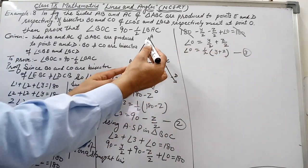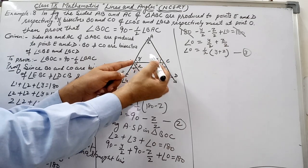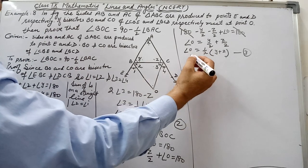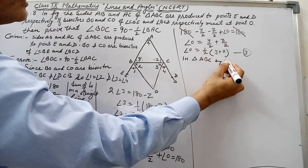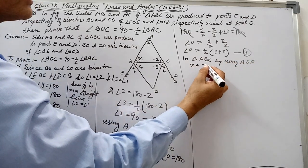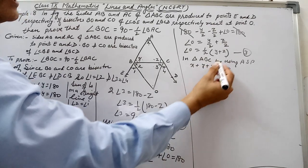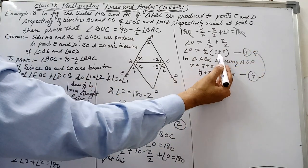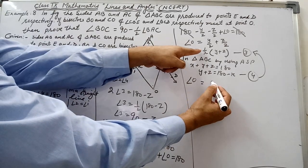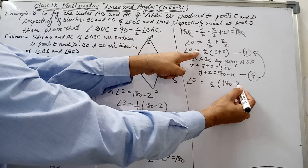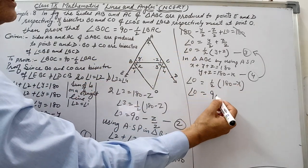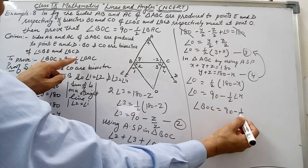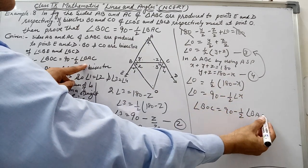Now we find Y plus Z from triangle ABC. By angle sum property, X plus Y plus Z equals 180 degrees, so Y plus Z equals 180 minus X. This is Equation 4. Substituting Equation 4 into Equation 3: angle O equals half of (180 minus X), which is 90 minus half of angle X. Therefore angle BOC equals 90 minus half of angle BAC. Hence proved. Thanks for watching.